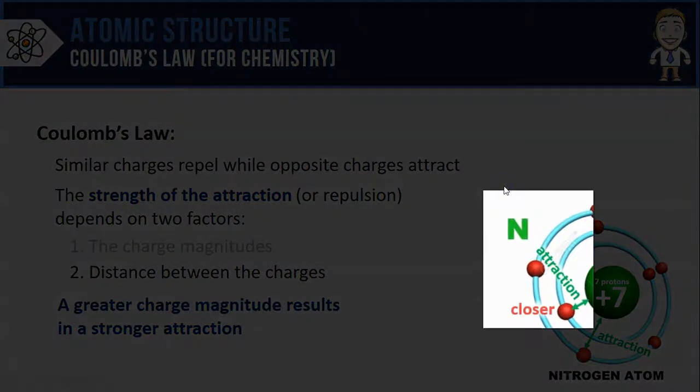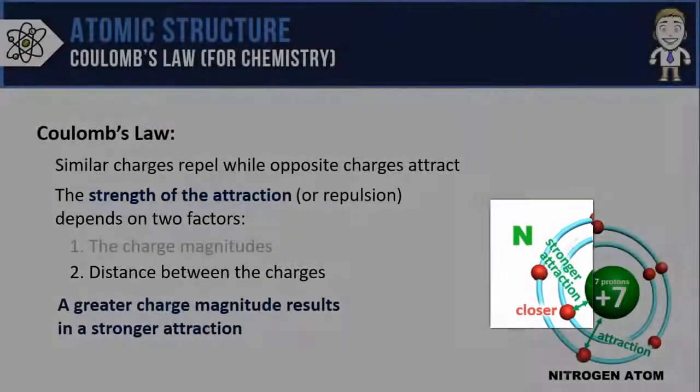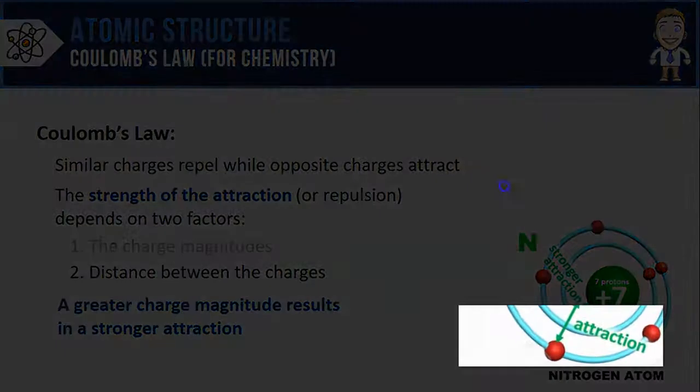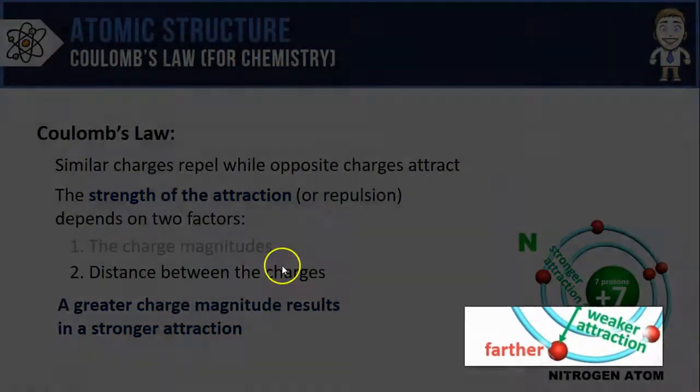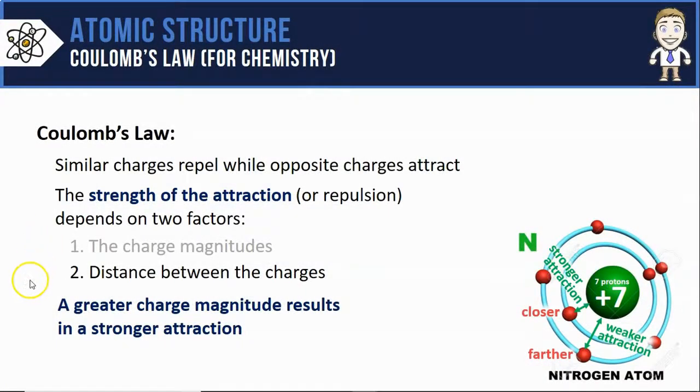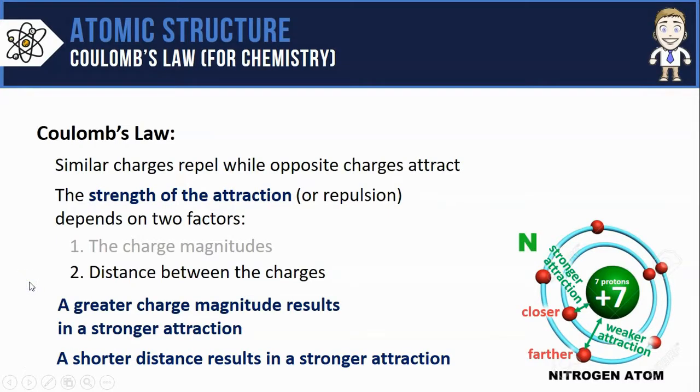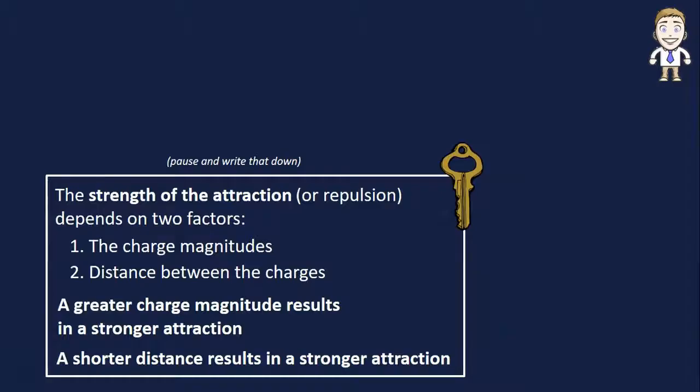As you might guess the electron that's closer to the nucleus in the first energy level will have the stronger attraction to it while the one that's farther away will have the weaker attraction. And that's another super important idea: let's summarize it by saying a shorter distance results in a stronger attraction. These are also the key ideas for this video, make sure that you've written them down.